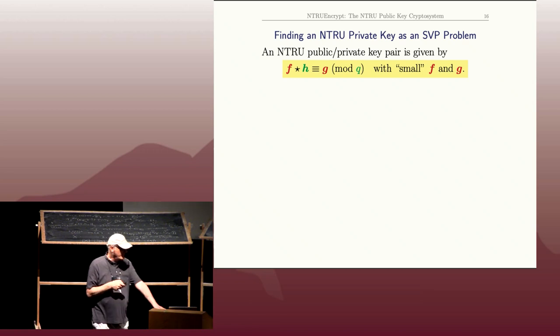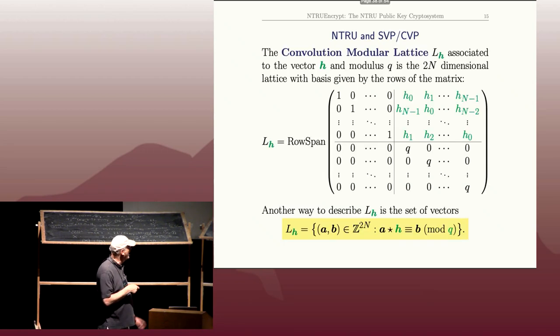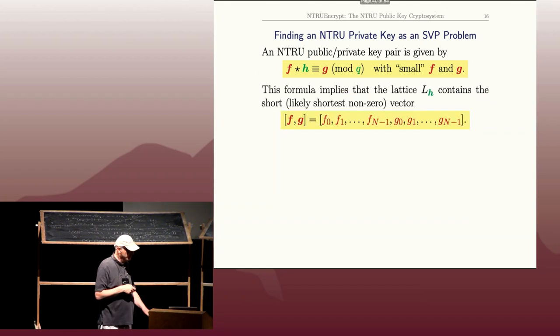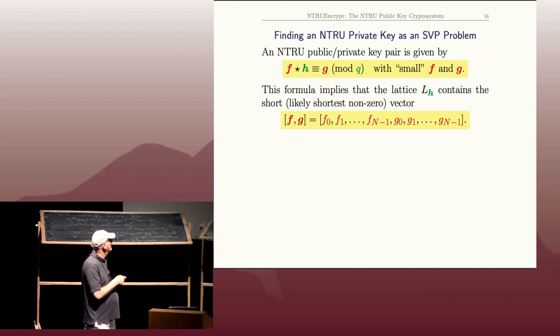That should look very familiar from the previous line. We're looking at all solutions to something times h equals something—the exact same equation, except with f and g instead of a and b. That tells me the vector whose first n coordinates are the coordinates of f and the second n coordinates are the coordinates of g is actually in this lattice L_h.